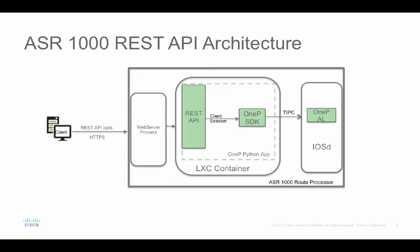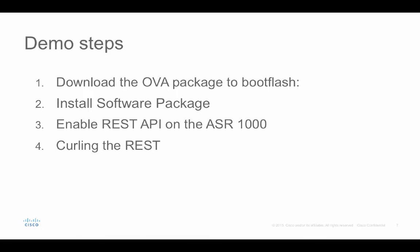It uses 1PK Python API under the hood. This demonstration consists of 4 steps. The first step, we need to download the OVE package to the bootflash on the ASR1000. Second, we need to install the software package. Then, we need to enable the REST API and activate the service container on the ASR1000. Last, we will deploy the REST using curl.